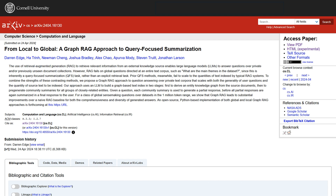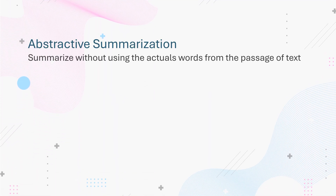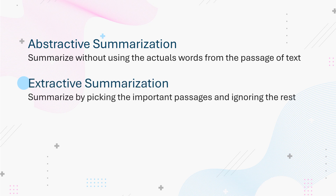Before we dive into the steps for creating a knowledge graph using Graph RAG, there are a couple of keywords we need to know. When we get a long document and we summarize it in our own words by emphasizing specific points or facts, it is called abstractive summarization. On the other hand, when we summarize it by picking the important points or facts word-for-word from the long document and ignore the rest, it is called extractive summarization. Graph RAG uses abstractive summarization in its implementation.